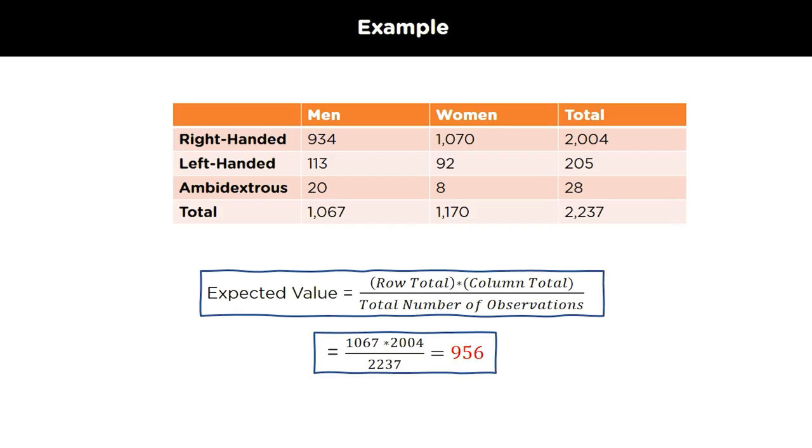For example, the expected value of a right-handed man can be calculated by multiplying 1067 into 2004 divided by 2237, which comes up to be 956. In a similar manner, you can calculate the expected value for each of the cells.